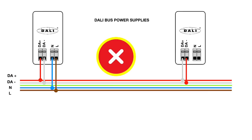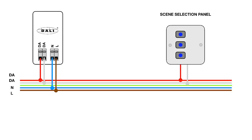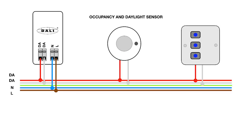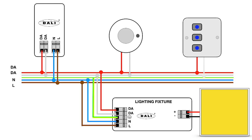That's if you have two devices providing power to the bus. The power supply provides power to control devices, which could be push buttons for scene setting, occupancy sensors or light level sensors. The clever thing about DALI is that the control devices share the same bus as the lighting fixtures.